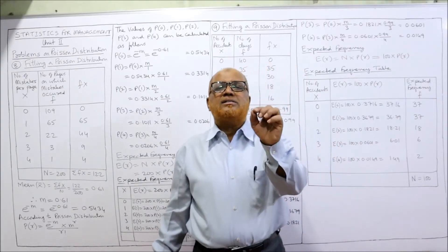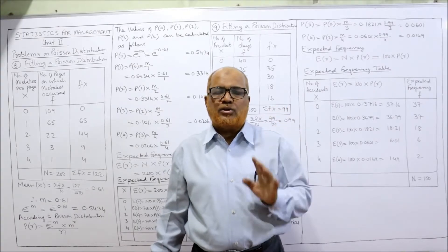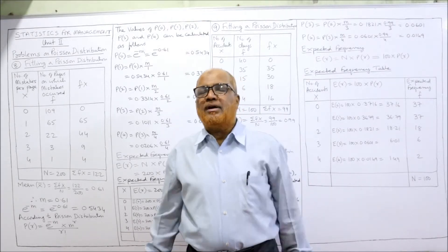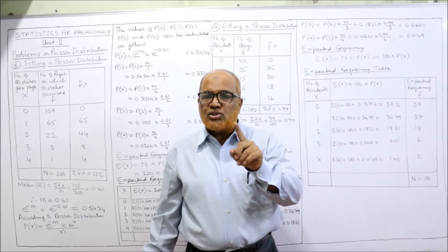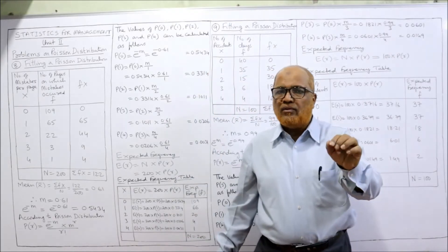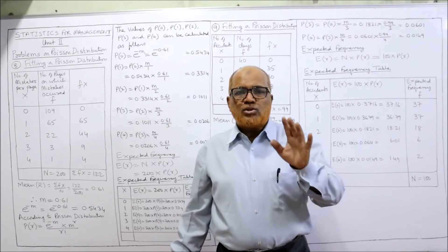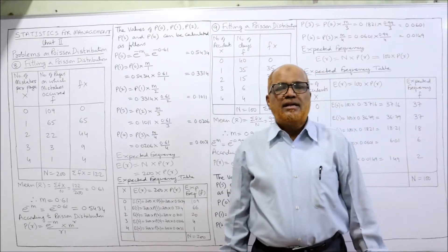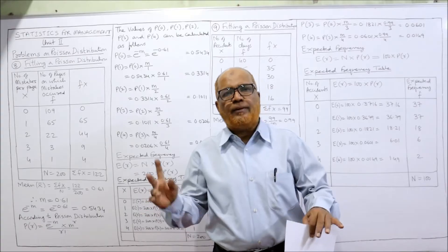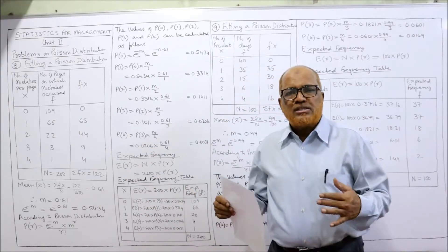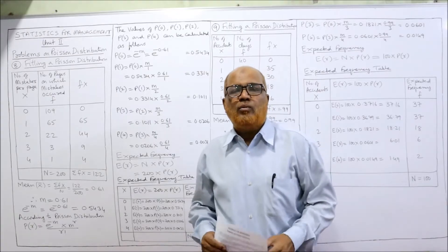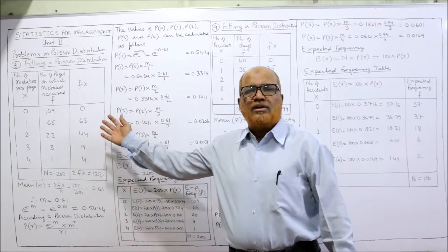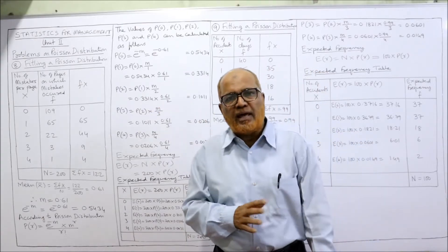In this eighth problem, I am going to explain how to find out the expected frequencies according to Poisson distribution, E of R. The last three problems — eight, nine, and ten — are very important from an examination point of view, so watch till the end. If you want perfect knowledge, watch all the videos: first the theory video, then the problems. Go to my channel's playlist, select Statistics for Management, and watch the Poisson distribution videos in order.